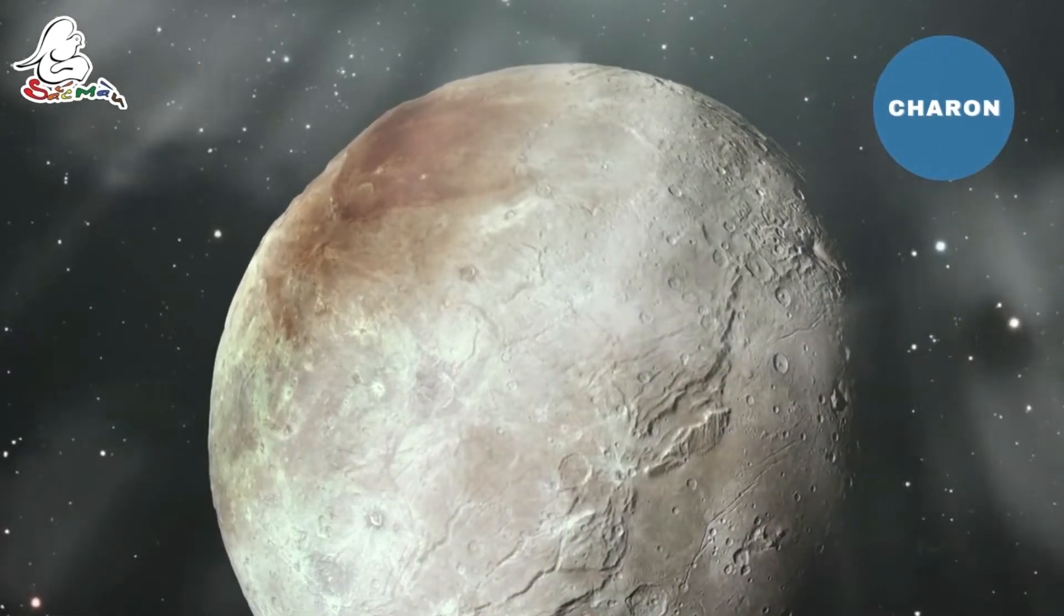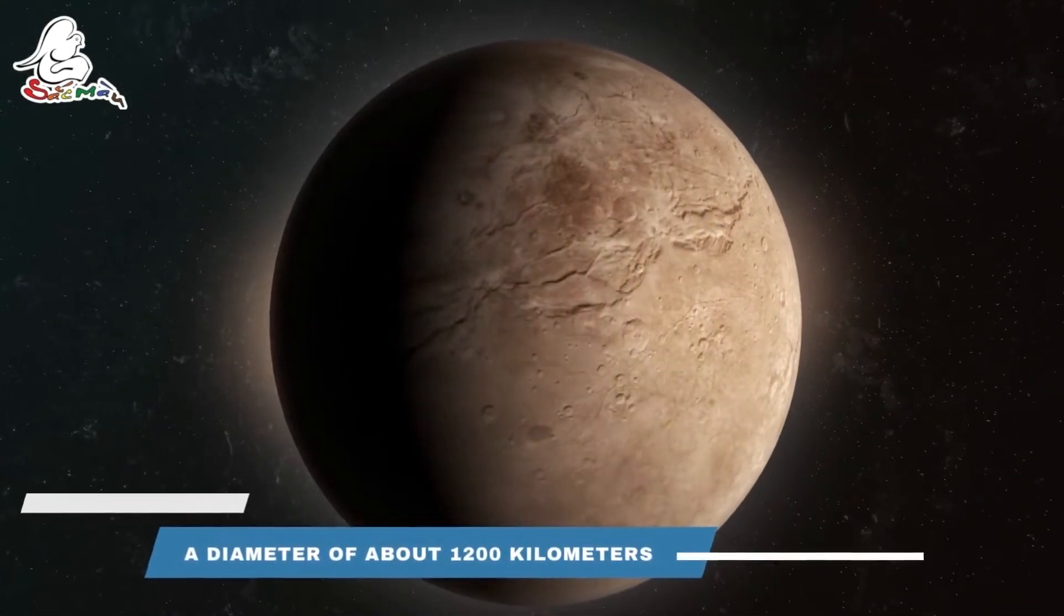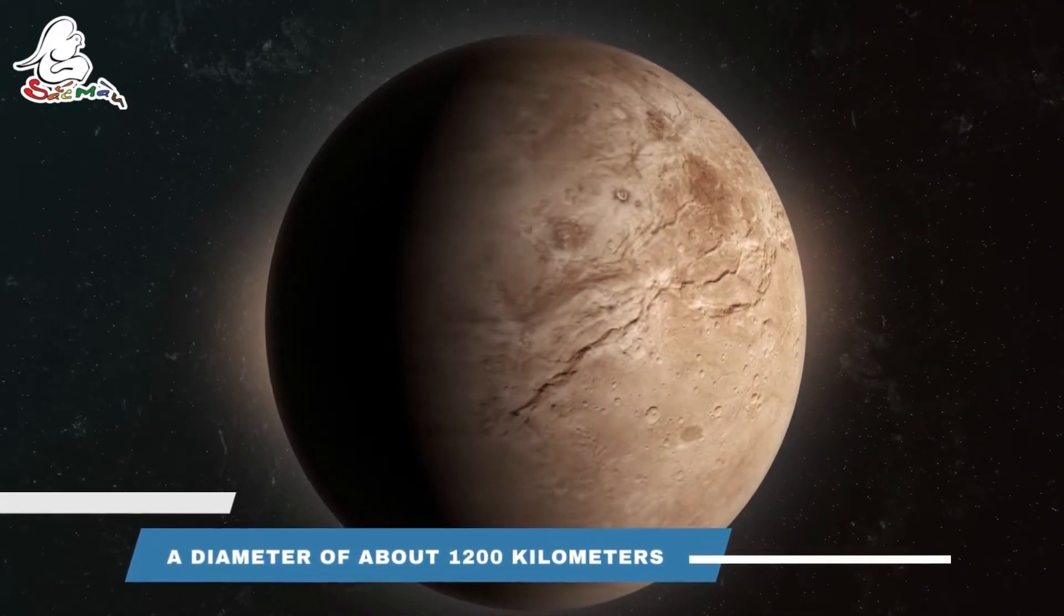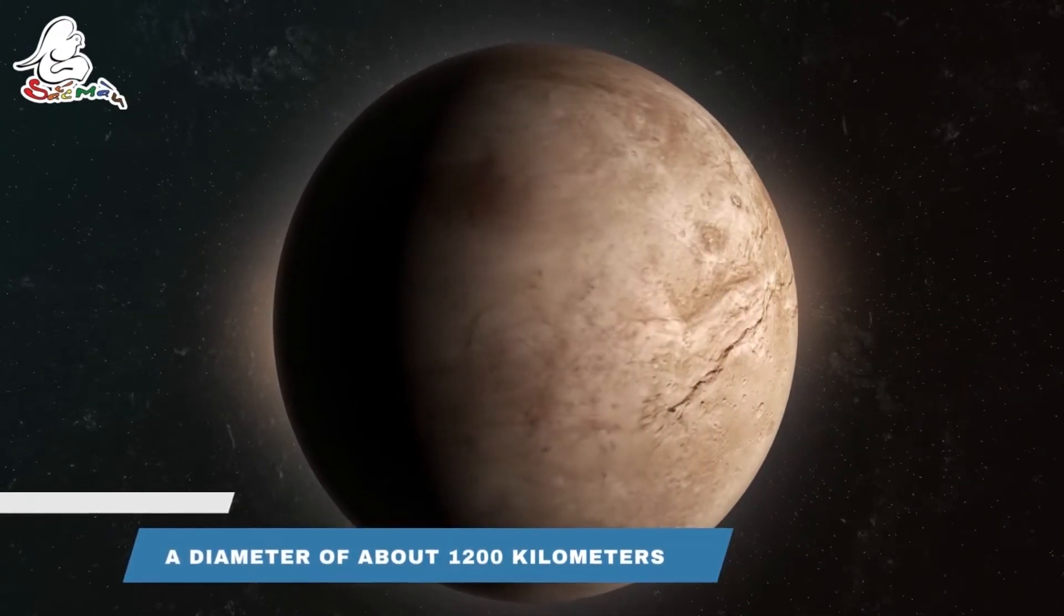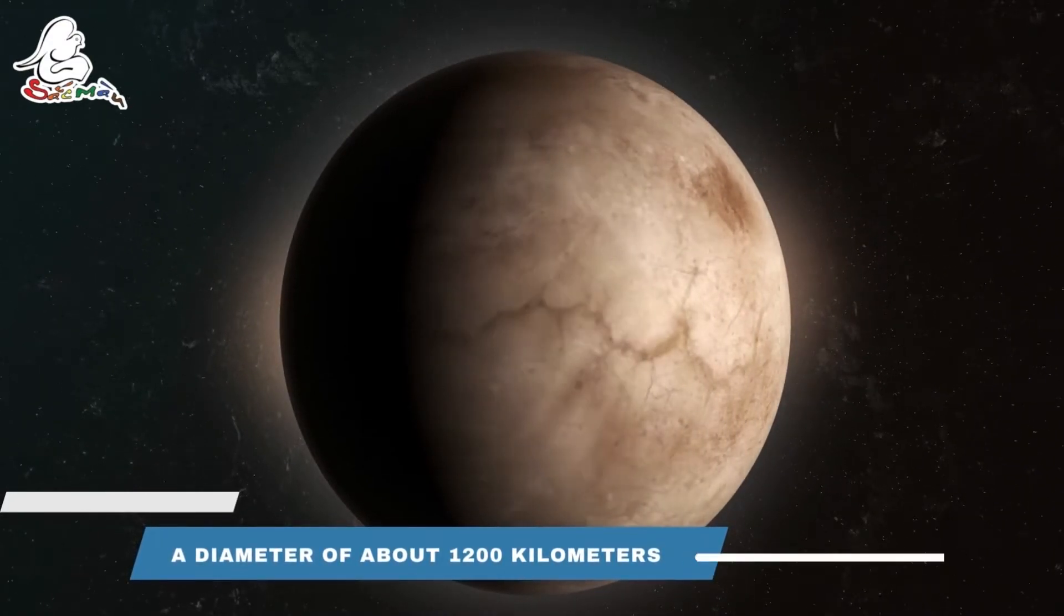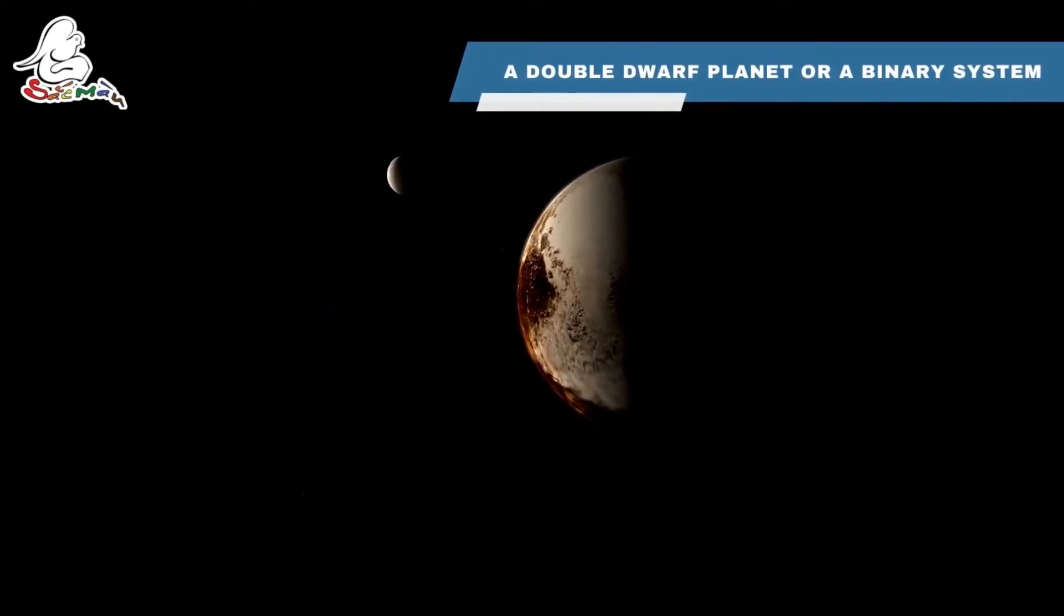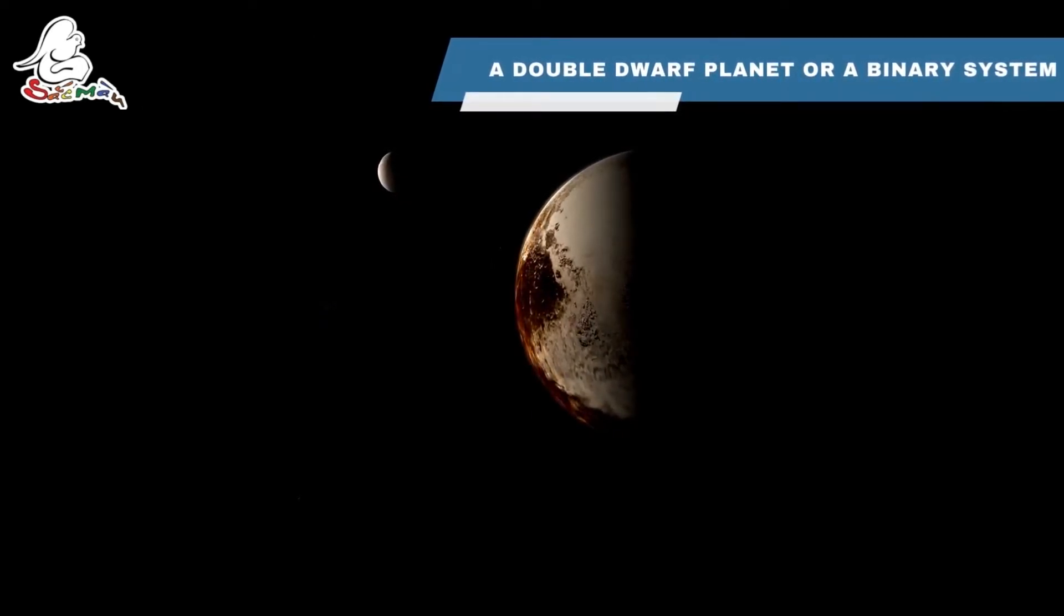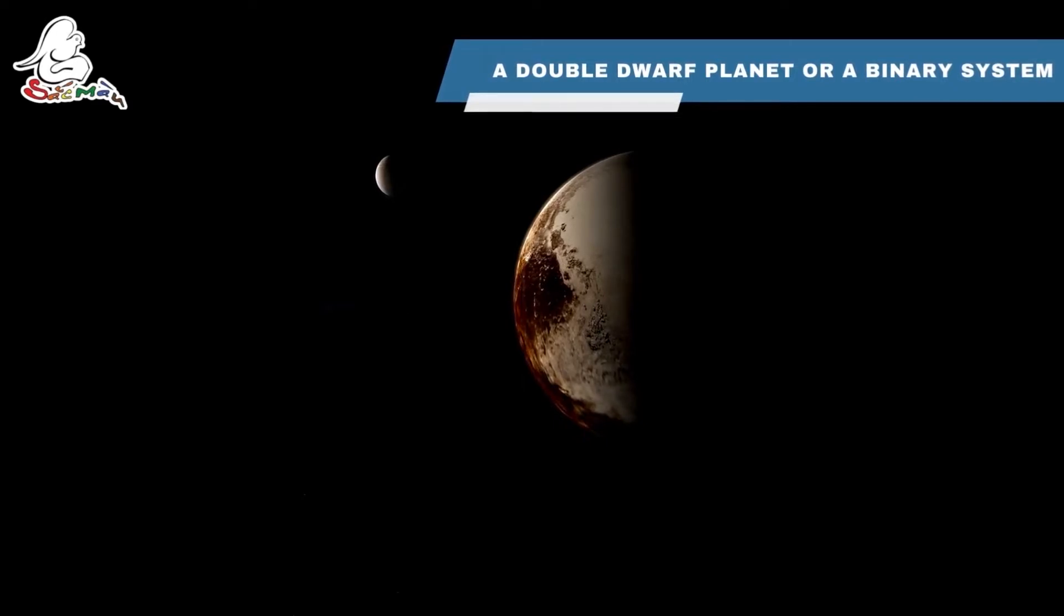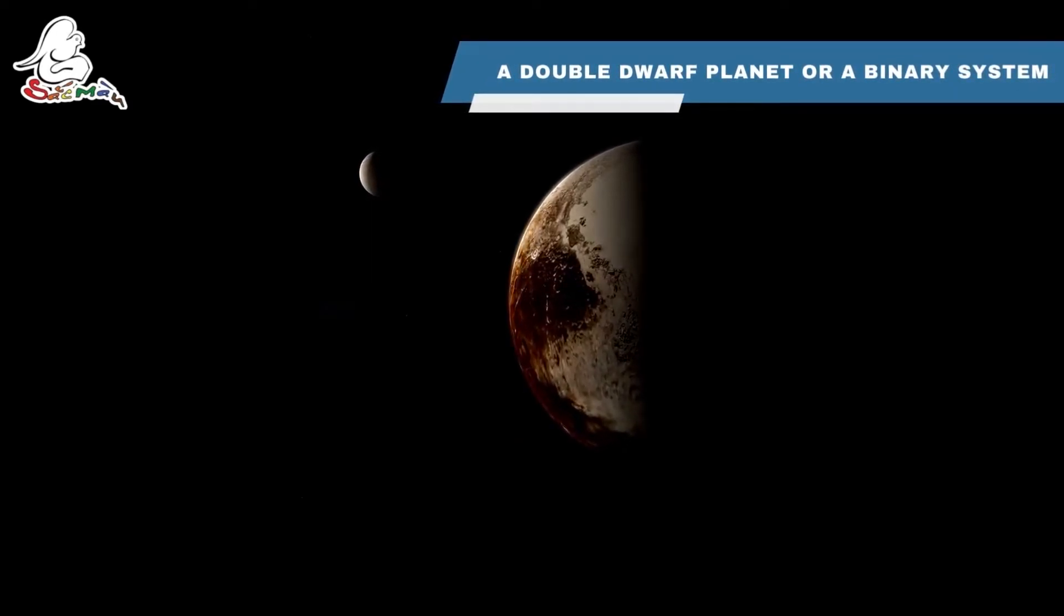Pluto's largest moon is called Charon. The spherical object has a diameter of about 1,200 km, almost half the size of dwarf planet. Because of Charon's impressive size, some astronomers refer to Pluto and Charon as a double dwarf planet or a binary system.